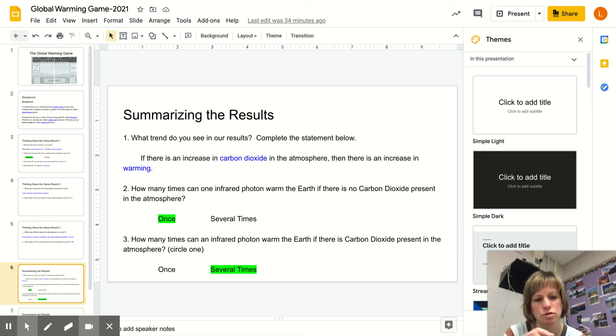Carbon dioxide can do double duty, so to speak, meaning one carbon dioxide molecule can trap heat—can trap an infrared photon not just once but several times. That's really why carbon dioxide can be this powerful greenhouse gas.